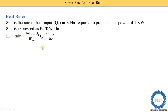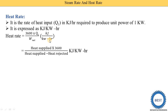Simplifying the definition: heat rate equals q1 divided by kilowatt, which further simplifies to kilojoule per hour divided by kilowatt, giving units of kilojoule divided by kilowatt-hours. From this definition, we understand that heat rate is the reciprocal of efficiency — heat rate equals 1 divided by efficiency.